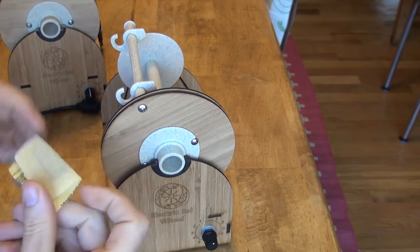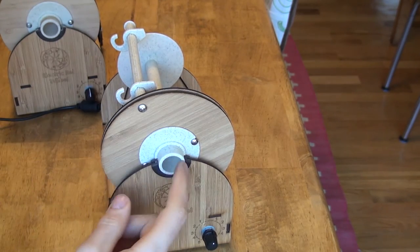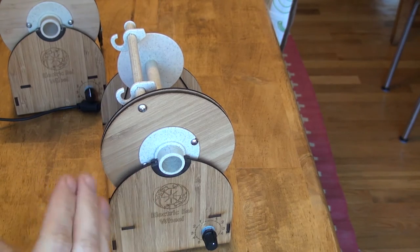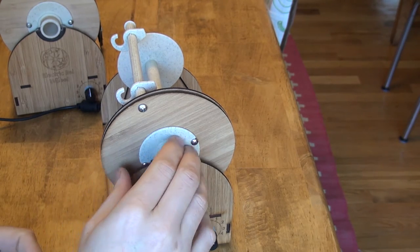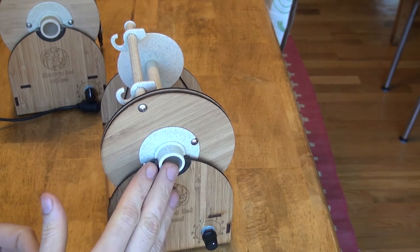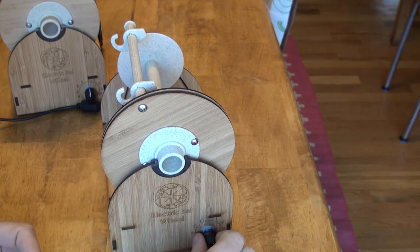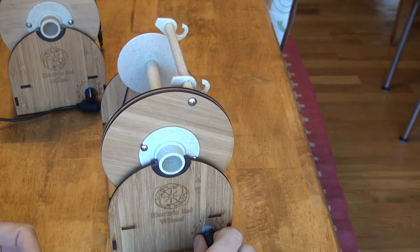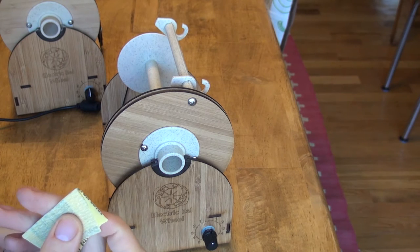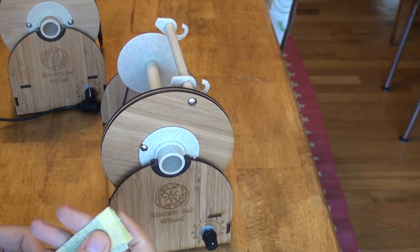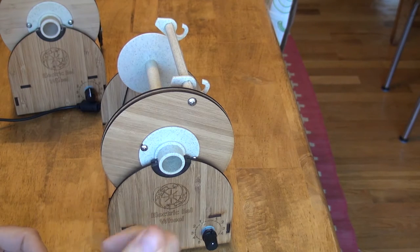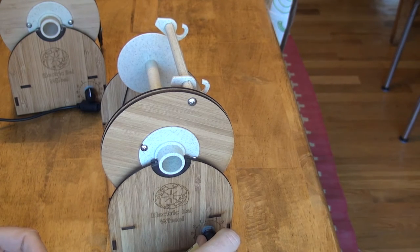So the fix for that is either run it for a long time, and that's kind of the safest option. You definitely don't want to over sand these things. It's safest to just let your wheel run for a while and it will become quiet. But if you want to address the issue right away, you can use some sandpaper. This is 320 grit sandpaper, so it's very fine. I would go with 320 or even finer sandpaper as a recommendation.